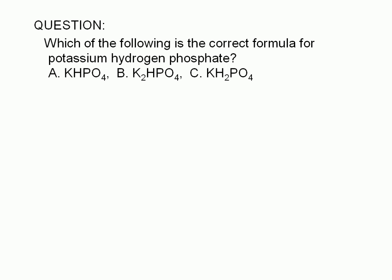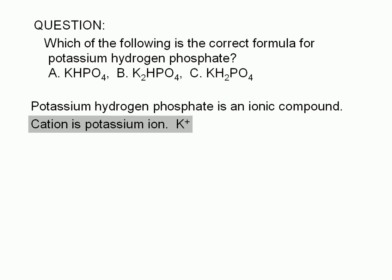Potassium hydrogen phosphate is an ionic compound. You should know that if the name of a compound starts with the name of a metallic element, it's ionic. Cations are generally derived from atoms of metallic elements, such as potassium. In the location of potassium in the periodic table, group 1A, we know that the charge of the potassium ion is plus one.